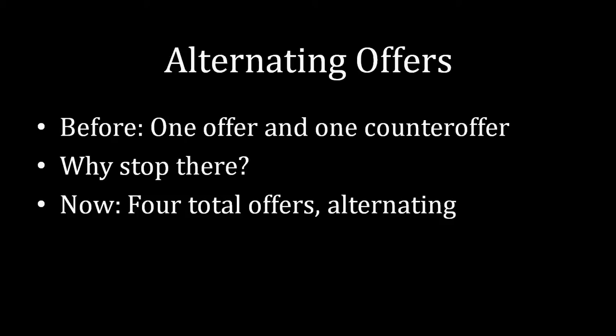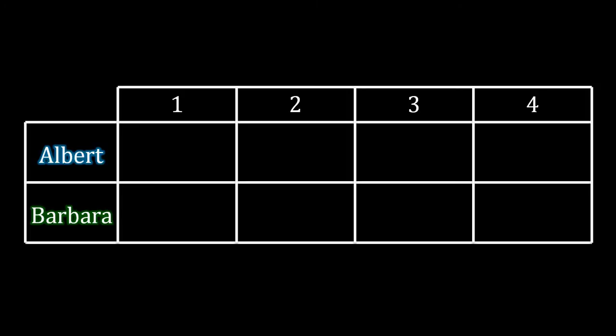I'm going to solve this without even using a game tree. I'm going to create a table here. I've marked it as one, two, three, and four, representing the first round of bargaining, second round, third round, and finally the fourth round. The top row is Albert, bottom row is Barbara. We're going to write down the values they will expect to receive if they reach that particular column of bargaining. We're going to start at the end like we always do. We're going to start all the way at the end with the fourth offer.